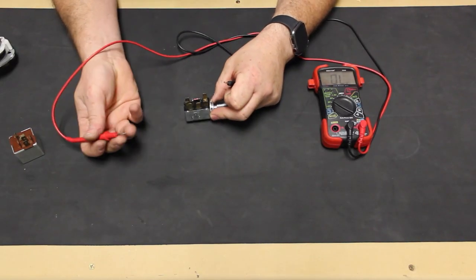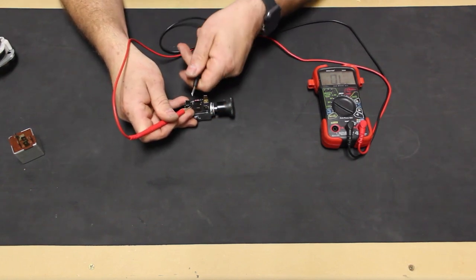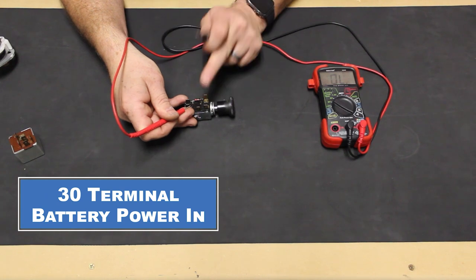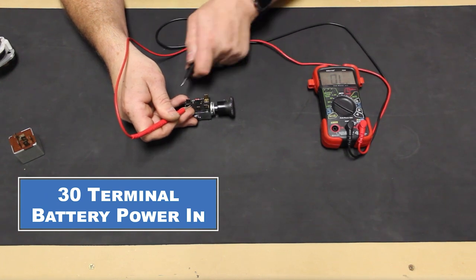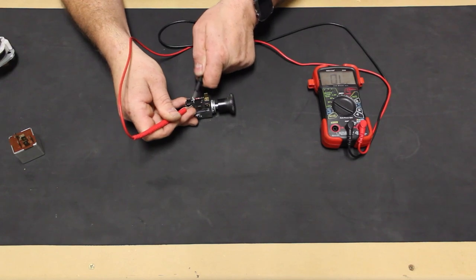We'll test the switch with a continuity tester and use a lead to provide power into the switch. So we touch a lead to the 30 terminal which would be battery power in. At the off position, we don't have power going out to any of the other terminals.